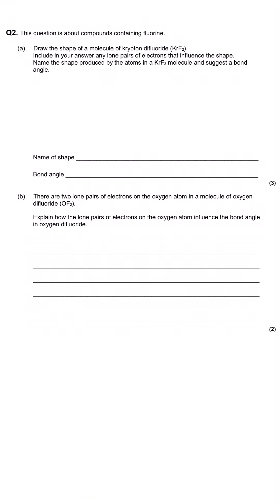In this question we are looking at chlorine containing compounds and we've got two different questions. One is a three mark question and another is a two mark question. So if we just again unpick what we're being asked to do for this question so we can see where our marks are going to go. We've been given the command to draw the shape of the molecule of krypton difluoride. We've been asked to name the shape and we've been asked to suggest a bond angle. So that's where our three marks are going to come from. So if we just use that method that I showed you in the previous question.